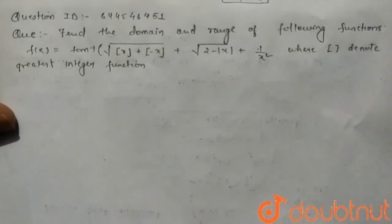In this question, find domain and range of the following function: f(x) equals tan inverse of square root of greatest integer function of x plus greatest integer function of minus x plus square root of 2 minus mod x plus 1 by x squared, where bracket denotes the greatest integer function.